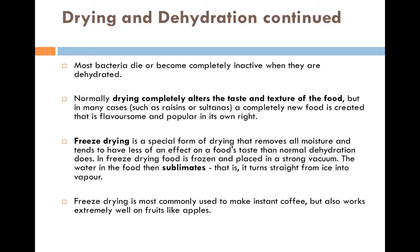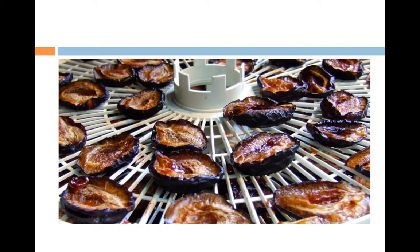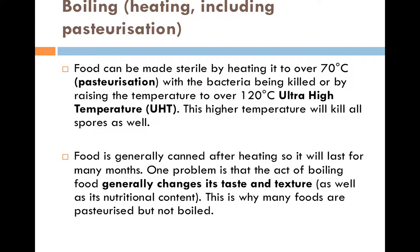Normally drying completely alters the taste and texture of the food, but not always. In some cases such as raisins or sultanas, it actually enhances the flavor. Another form of drying is freeze drying — a special form that removes all moisture and tends to have less of an effect on the food's taste than normal dehydration. You can see this often in instant coffee, where they freeze dry to preserve the taste and then export it around the world. Here's an example of a food dryer used in the lab — those look like apricots or plums.